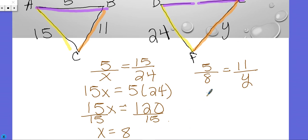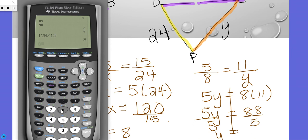So I get 5 over 8 equals 11 over y. Let me not skip that though. 8 times 11, so 5y equals 88.